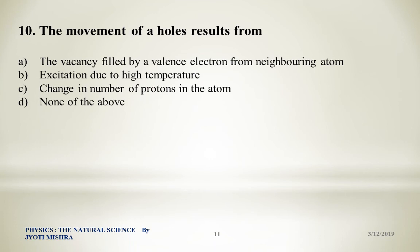Question number 10: The movement of holes results from — Option A: the vacancy filled by a valence electron from a neighboring atom. Option B: excitation due to high temperature. Option C: change in number of protons in the atom. Option D: none of the above. The correct answer is Option A: the vacancy filled by a valence electron from a neighboring atom — that is how holes move through the semiconductor.